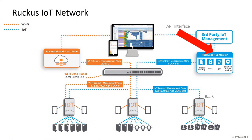As we look at our network from an IoT perspective, this module is really going to focus on the Ruckus IoT controller and the API interface between the controller and third-party management applications. The same API can also be used for our integrated rules engine and, if required, by a cloud application-based third-party integration.